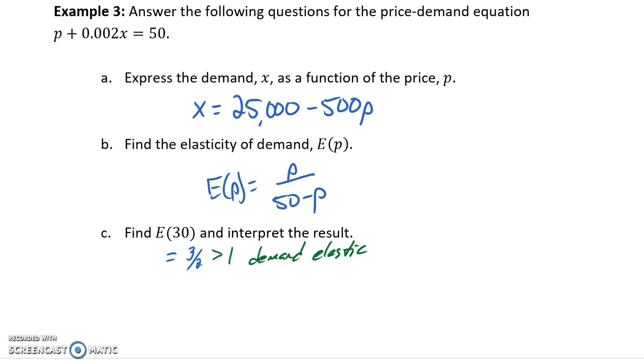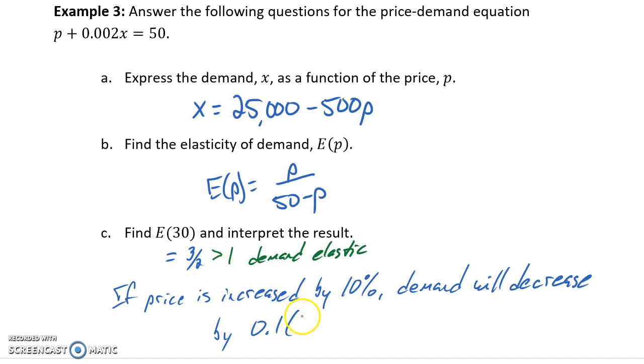So, there are a few different ways that we could interpret these results. Throughout these examples, we'll take a look at a couple different variations. But one thing that we could say here is that if price is increased by, say, 10%, then our demand will decrease by 0.1, or 10%, times the value for our elasticity function, which would give us 0.15, or 15%. So, to calculate change in demand, we can always take our percent change in price times elasticity of demand to generate that percent change in demand.